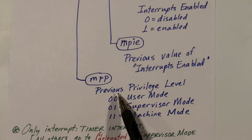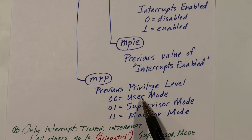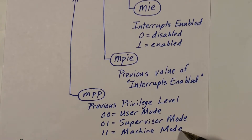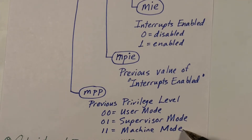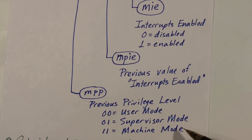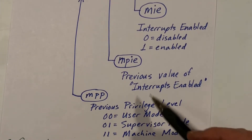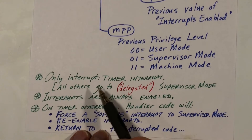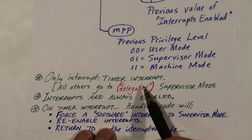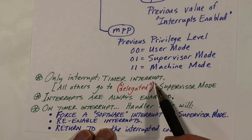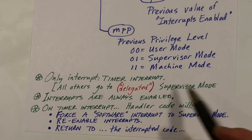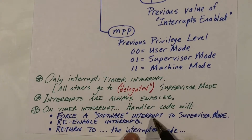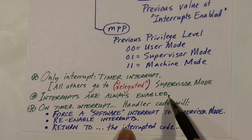The mStatus register also has a field for saving the previous mode level. We could have been interrupted in user mode, supervisor mode, or machine mode, so we have two bits to save that. Interrupts and traps only go upward — there's no interrupt going from machine mode to supervisor mode. The only interrupt handled at machine mode level is the timer interrupt. All other traps are delegated to supervisor mode. Timer interrupts can't be delegated, so they get mutated into something called a software interrupt.